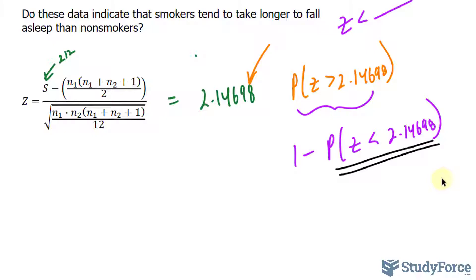Now we can go ahead and find out the probability of this using the table. As you can see, the table gives us, and I'm using 2.15 just for simplicity's sake, the table gives us a value of 0.9842. So I have 1 minus 0.9842. That is equal to 0.0158.